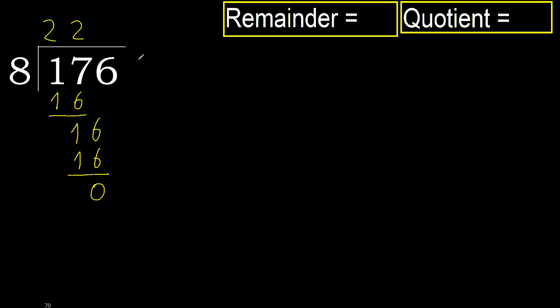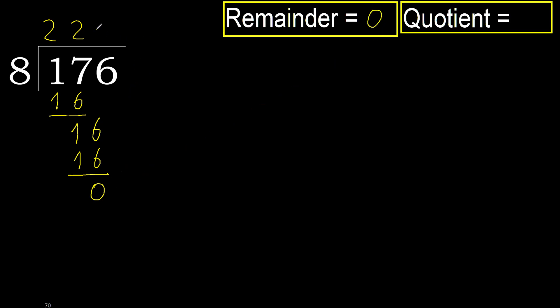Next — there is no more number, therefore finish. 176 divided by 8 is 22. We'll be right back. Thank you.